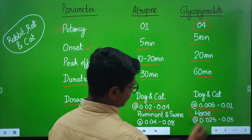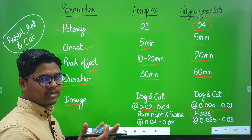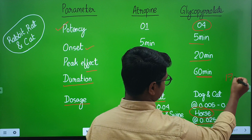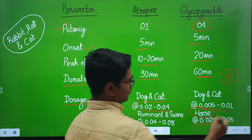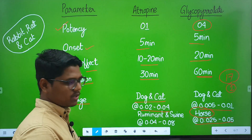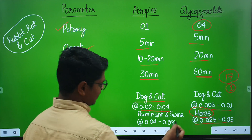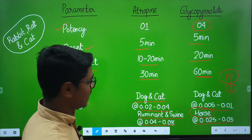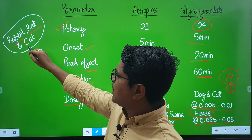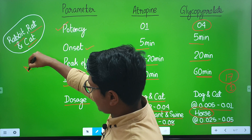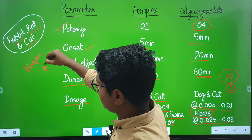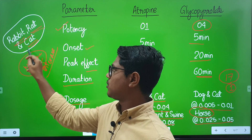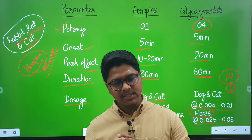Glycopyrrolate is used in case of horses, but atropine is not used in horses because of its more profound intestinal effects. In a study in horses where 17 horses were given glycopyrrolate, only one of them developed colic. So you can use glycopyrrolate in horses, with caution of course. For ruminants and swine, you can also use atropine at a dose rate of 0.04 to 0.08 mg/kg. One important thing: in rabbits, rats, and cats, they have an enzyme known as atropinase, which metabolizes atropine. So in these species, atropine will be metabolized at a faster rate compared to other species.